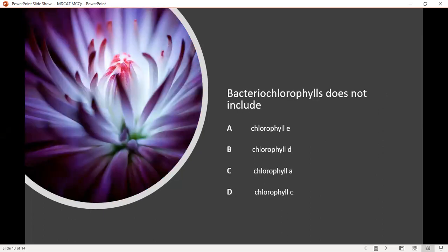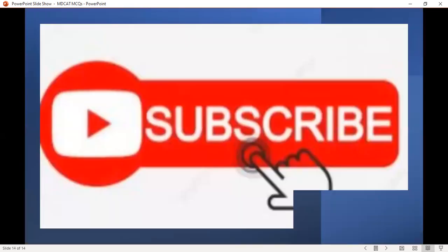Bacteriochlorophylls does not include option A chlorophyll E, option B chlorophyll D, option C chlorophyll A, and option D chlorophyll C. The correct answer is option C chlorophyll A is not included in Bacteriochlorophyll.